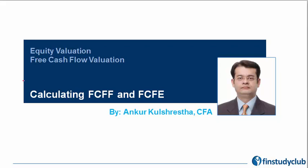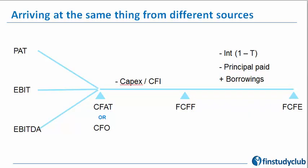Taking up from where we left in the previous session, in this one we are going to talk about how to actually calculate the free cash flows — both versions: free cash flow to the firm as well as to the equity. This is a part where many students find it very confusing, perhaps because it involves some intricate calculations and understanding of the financial reporting analysis done at level one, particularly cash flow statements. This graphical representation will help simplify some of the aspects coming up in the forthcoming slides.